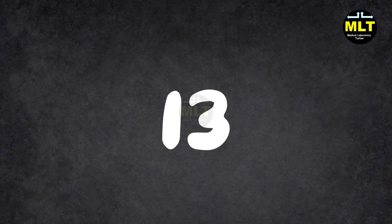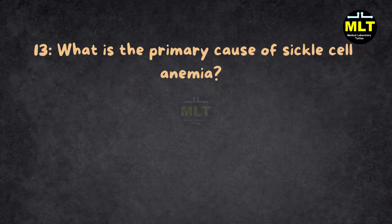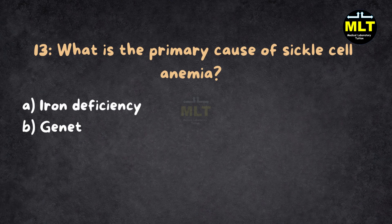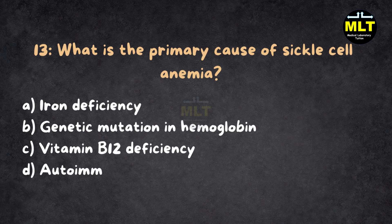MCQ 13. What is the primary cause of sickle cell anemia? A. Iron deficiency. B. Genetic mutation in hemoglobin. C. Vitamin B12 deficiency. D. Autoimmune response.